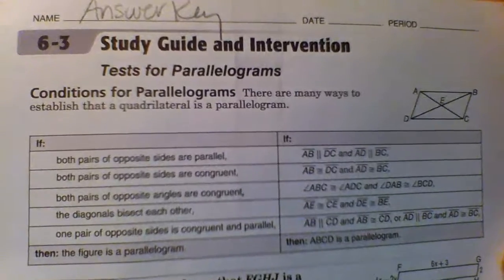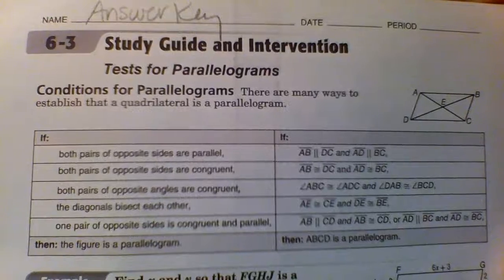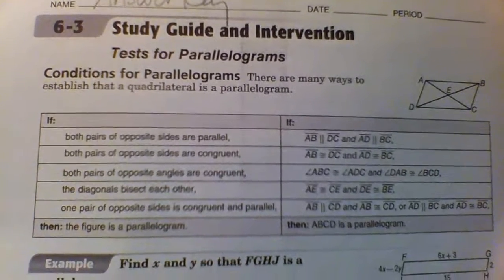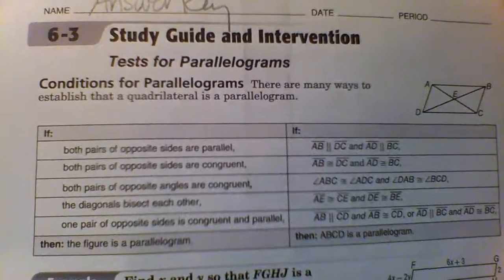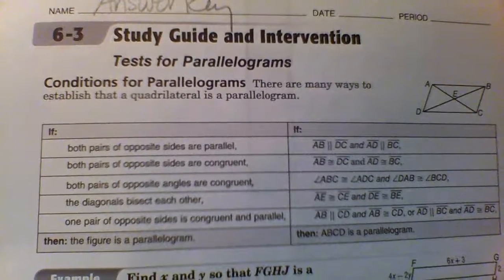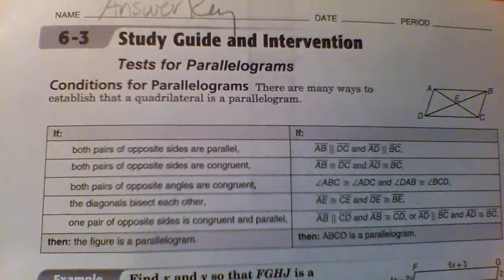If you're testing to see if something is a parallelogram, you may test one of five conditions. If both pairs of opposite sides are parallel, then it's a parallelogram. If both pairs of opposite sides are congruent, it's a parallelogram.